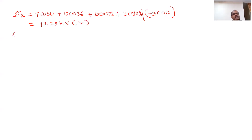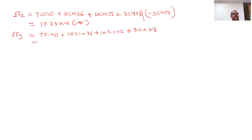Now let us calculate ΣFy, the algebraic sum of all vertical forces. Converting each force to its vertical component using sine: ΣFy = 7 sin 0° + 10 sin 36° + 10 sin 72° + 3 sin 108°. The answer we get is 18.24 kN acting upwards.